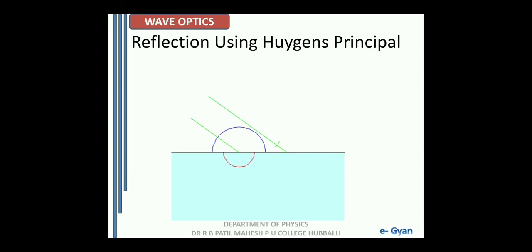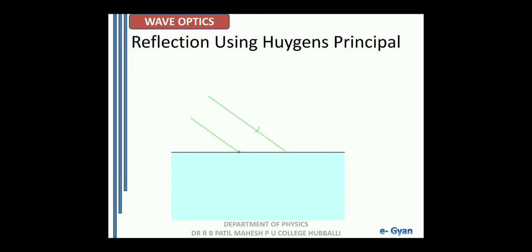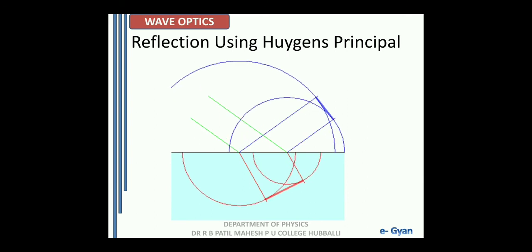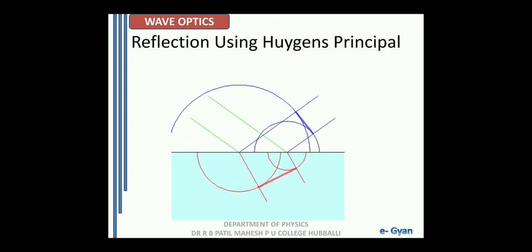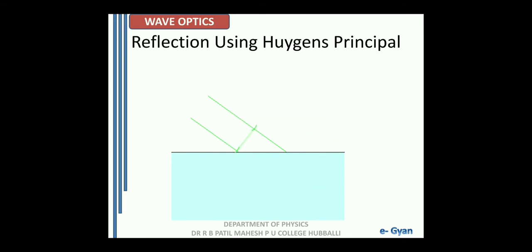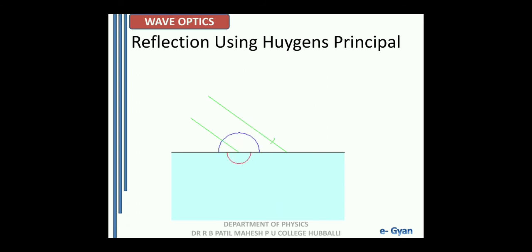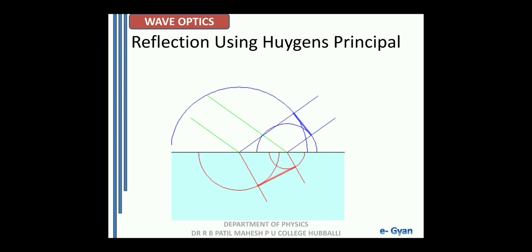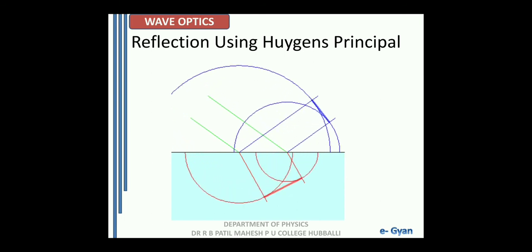Now try to understand the diagram. Here two phenomena are happening simultaneously. A beam of light is incident on the interface between two media. The reflection and the refraction are occurring at the same time. So it gives us a picture of how actually the reflection and refraction happen. The green color plane which is moving towards the interface is the incident wavefront. The blue color plane moving away from the interface is the reflected wavefront, and the red color one which moves in another medium is the refracted wavefront. Thus, we have reflection and refraction happening together.